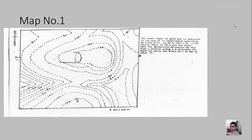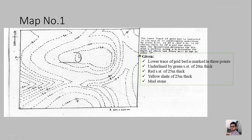Here is the very first map, in which the trace of an outcrop has been cut at three points — that is why it is called a three-point problem. The lower trace of a grey bed is marked at three points. Below the grey sandstone there is a green sandstone bed of 20 meters thickness, followed by a red sandstone of 25 meters, then a yellow shale of 25 meters, and finally a mudstone. This is the overall stratigraphy of the area.